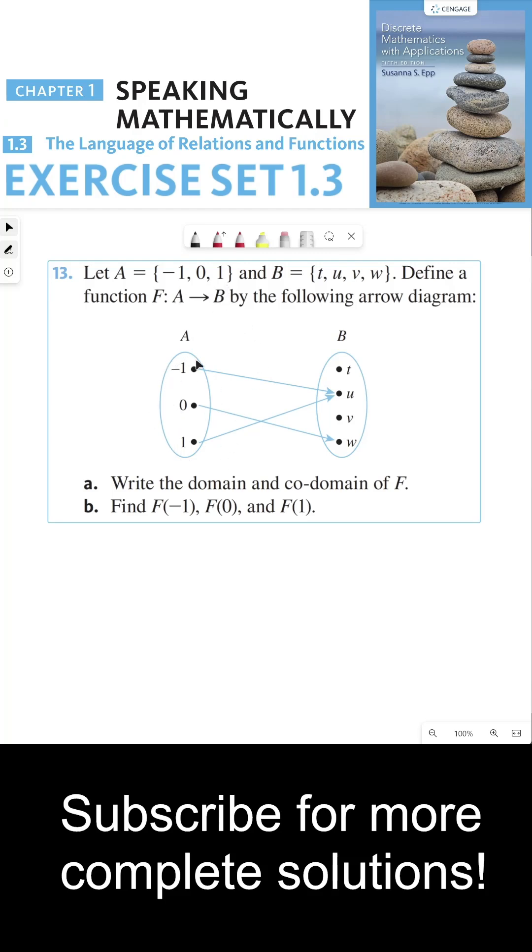So, my set A is my domain, and my set B here is my codomain. That's how you answer part A.